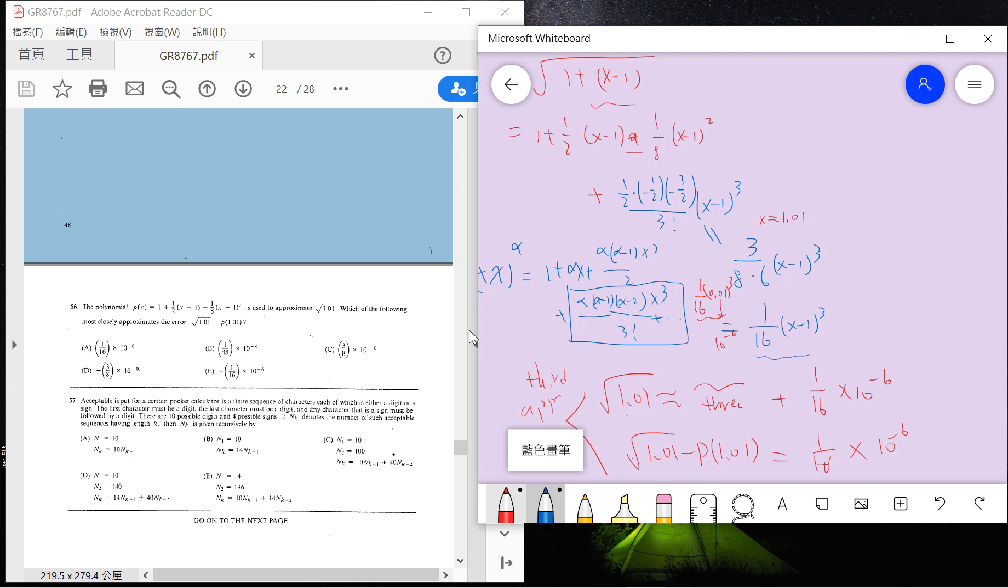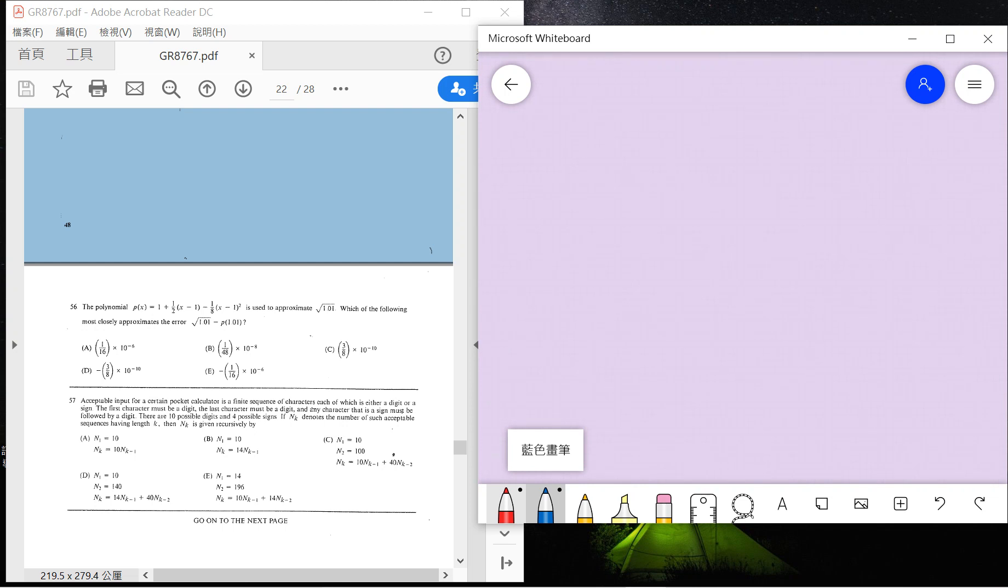So the answer looks like the answer is A. The answer is A. Basically this is not a clear deviation, so there is Taylor approximation theory.